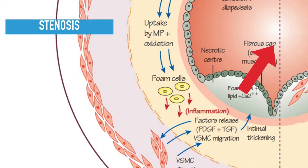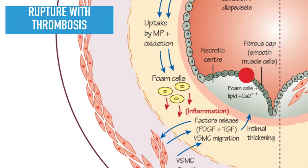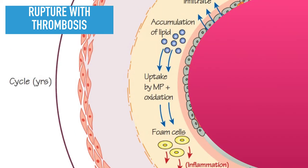Plaques may lead to blood flow limitation, often referred to as a stenosis. Plaques may complicate by rupturing — a plaque rupture could lead to acute thrombosis due to the release of prothrombotic material from within the plaque core.